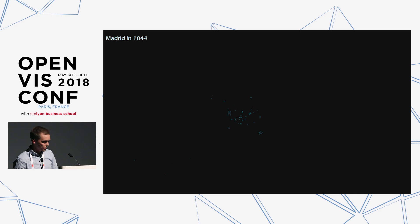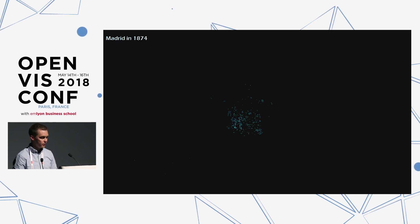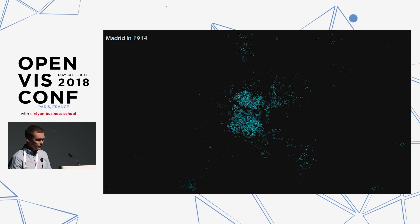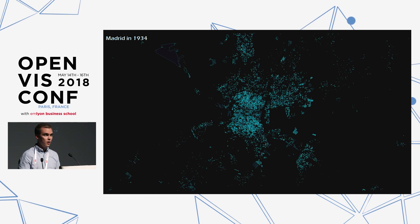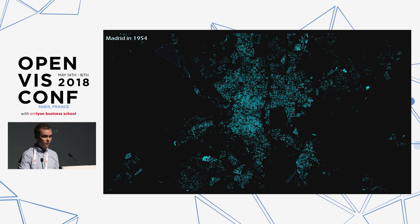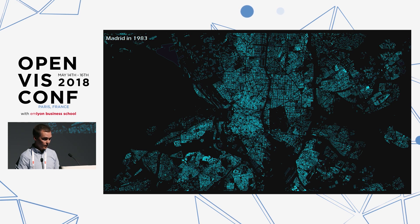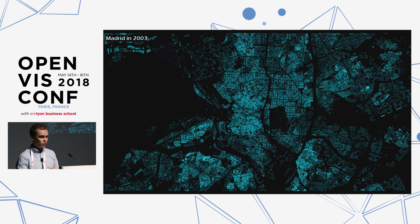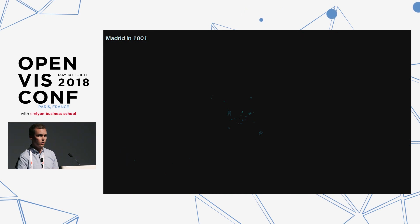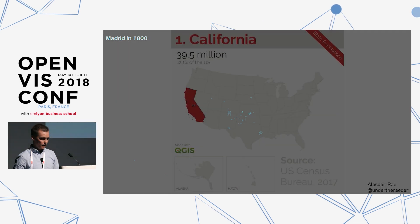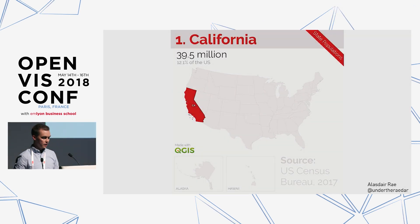This is buildings from Madrid — there's a year running on the top left. I've done a similar thing for quite many cities where I've found suitable data, and here you can see how the city grows slowly — buildings appear on the map on the year when they were built.